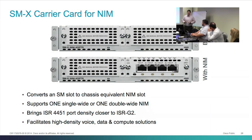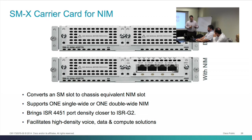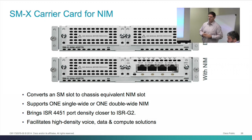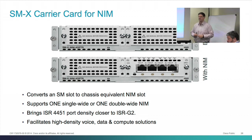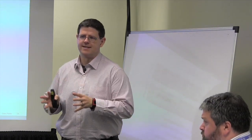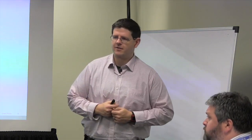We also have an SM carrier card. Feedback from the 4451 indicated a need for more voice density in some cases, so on platforms with an SM slot, we have a carrier that allows you to put one network interface module card in an SM slot. It looks like it could take two NIMs but only takes one — either single-wide or double-wide — due to technical backplane addressing reasons.